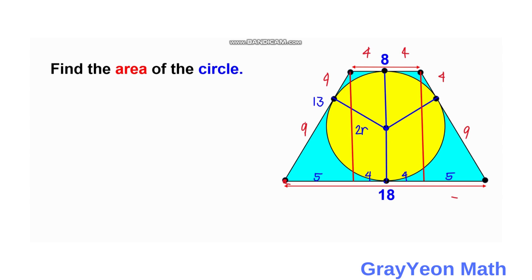So the hypotenuse is 13. So we have 13 squared is equal to 4R squared plus 5 squared. So we have 169 is equal to 4R squared plus 25. So 4R squared is equal to 169 minus 25, so that will be 144. Then 4R squared, so divide both sides by 4, and this becomes 36. So R squared is equal to 36.